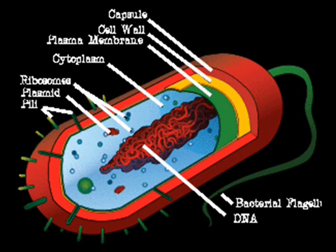The plasma membrane is the layer which keeps the internal liquid from leaking out. However, it does have a second function which allows liquid to pass through either way.